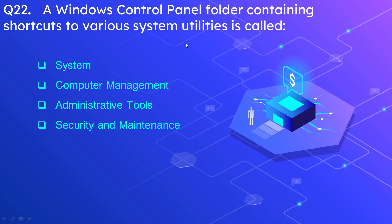Question number 22: A Windows control panel folder containing shortcuts to various system utilities is called? The options are System, Computer Management, Administrative Tools, and Security and Maintenance. The correct answer is Administrative Tools.